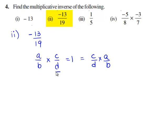Here c by d is called the multiplicative inverse of a by b, and a by b is called the multiplicative inverse of c by d. Now consider minus 13 by 19.